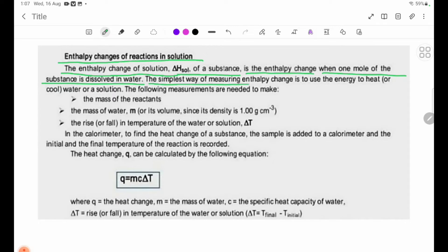The simplest way of measuring enthalpy change is to use the energy to heat or cool water or solution. The following measurements are needed: the mass of water m, or its volume since its density is 1.00 grams per cubic centimeter, and the rise or fall in temperature of the water or solution, delta T.